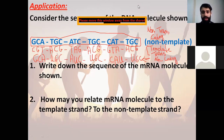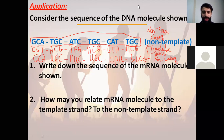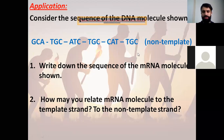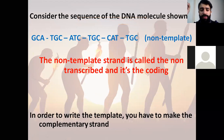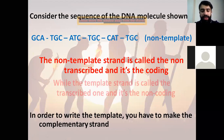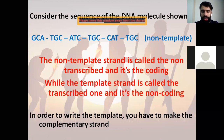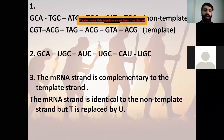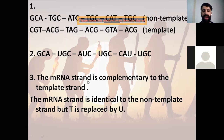Now let's move to part two. You have to keep it in mind that the non-template is called the non-transcribed — it's the coding strand — and the template is called the transcribed strand, it's the non-coding strand. In order to write the template, you make the complementary strand. The mRNA has the same sequence as the non-template, where T is replaced by U. So mRNA is complementary to the template, or mRNA is identical to the non-template where T is replaced by U.